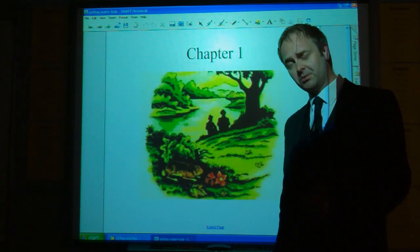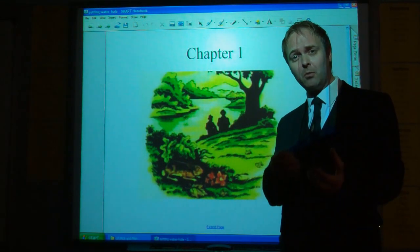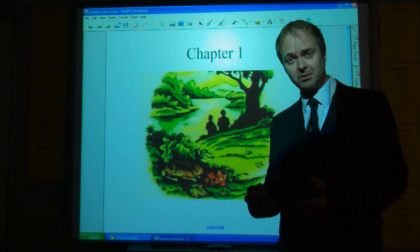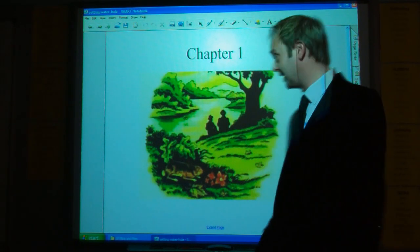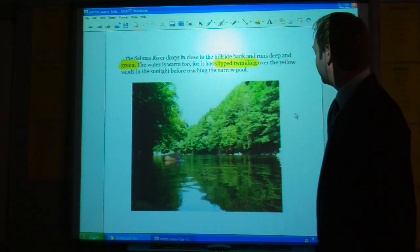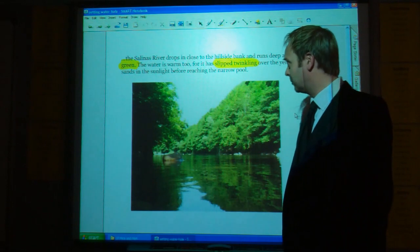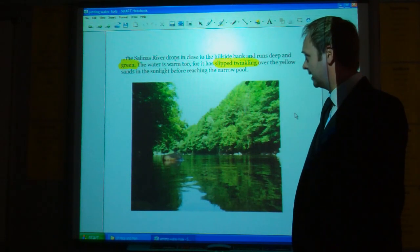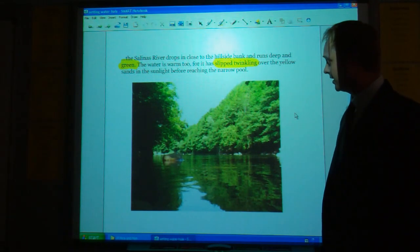The description of this goes over chapters 1 and 6. We'll start with chapter 1, but it is the way in which chapter 6 parallels chapter 1 that's really important in terms of this setting. First of all, key words: the Salinas River drops in close to the hillside bank and runs deep and green. The water is warm too for it slipped twinkling over the yellow sands in the sunlight before reaching the narrow pool.